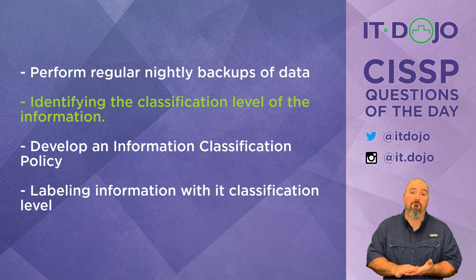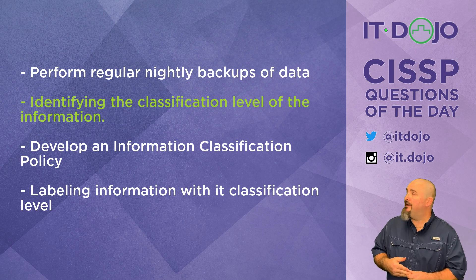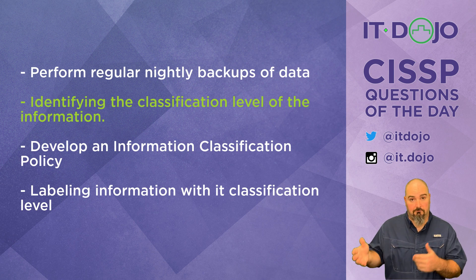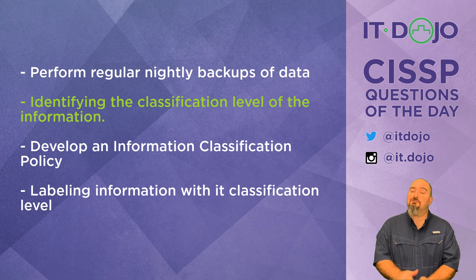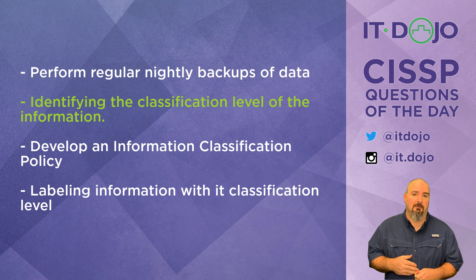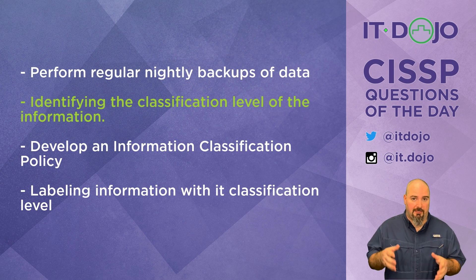The third choice asks about the information owner being responsible for developing an information classification policy — no. That role typically falls to somebody in an ISSO-type role, not the information owner. They comply with the policy by assigning the appropriate labels based on what's defined in that policy. The last choice says the information owner would be responsible for labeling the information with its appropriate classification level. That's not the information owner's job either — that falls more to the custodian, at the direction of an ISSO.